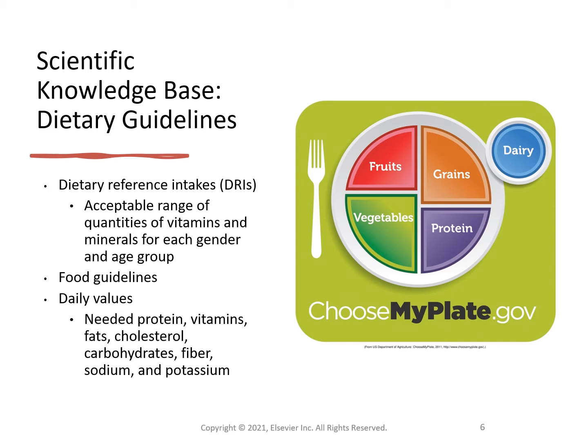The US Food and Drug Administration created daily values for food labels in response to the 1990 Nutrition Labeling and Education Act. The FDA established two reference value sets: reference daily intakes (RDAs) for proteins, vitamins, and minerals, and daily reference values (DRVs) for nutrients such as total fat, saturated fat, cholesterol, carbohydrates, fiber, sodium, and potassium. Combined, both sets make up the daily value on food labels. Daily values provide a more understandable format for the public and are based on a 2,000 kilocalorie per day diet for adults and children four years and older.